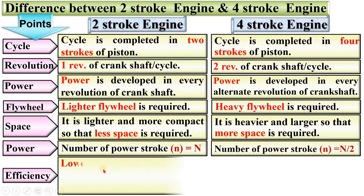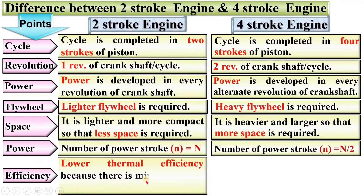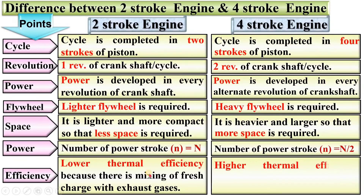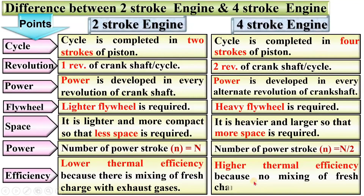Now, efficiency. The two-stroke engine has lower thermal efficiency because there is a mixing of fresh charge with the exhaust gases. This is a drawback of the two-stroke engine. In case of a four-stroke engine, there is higher thermal efficiency because there is no mixing of fresh charge with the exhaust gases.